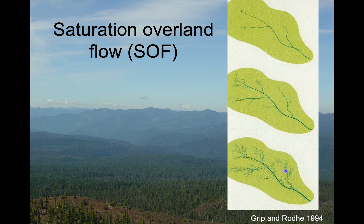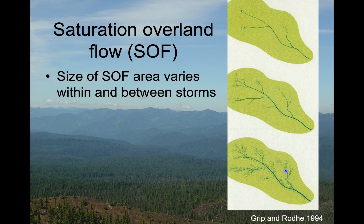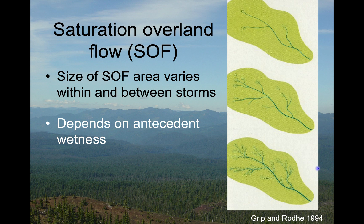Saturation overland flow is really dynamic in both space and time. It varies during the rainstorm and also between storms. A short, low-intensity storm will saturate much less of the landscape than a really prolonged storm. Similarly, very dry conditions before the storm will produce less saturation overland flow than storm after storm where the landscape isn't drying out between events. The fancy term for this is antecedent wetness — how wet the landscape is prior to the start of the storm.